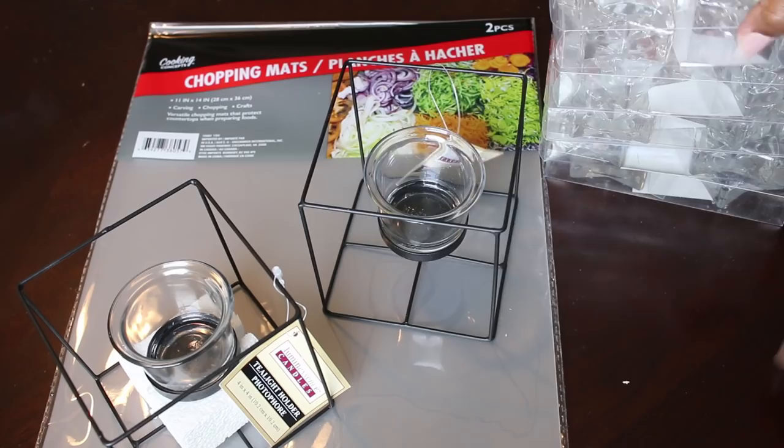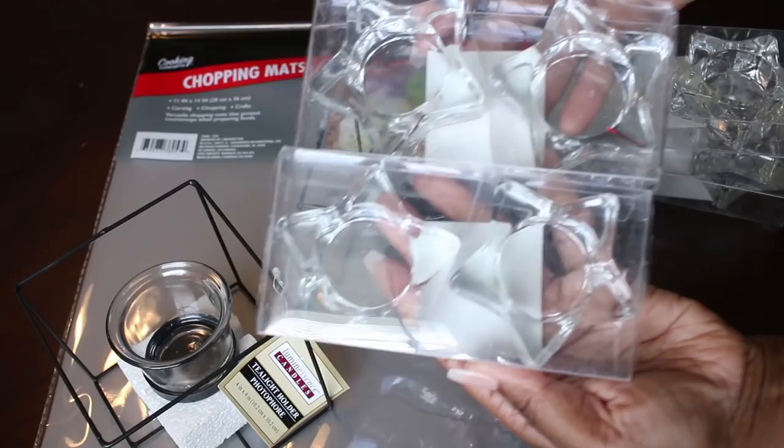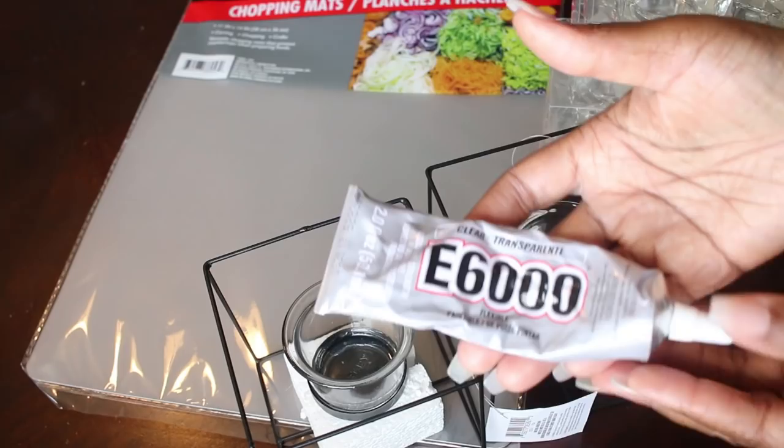I purchased two tea light candle holders, six packs of star glass candle holders, one pack of chopping mats, and E6000.